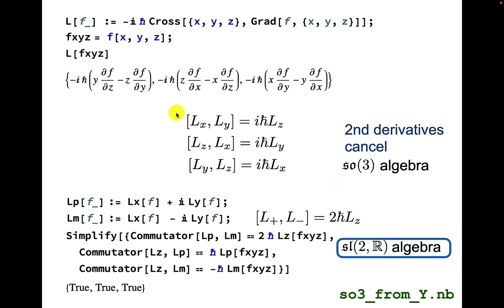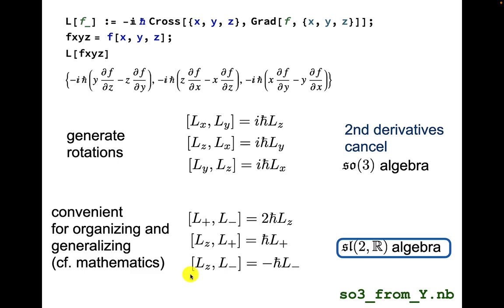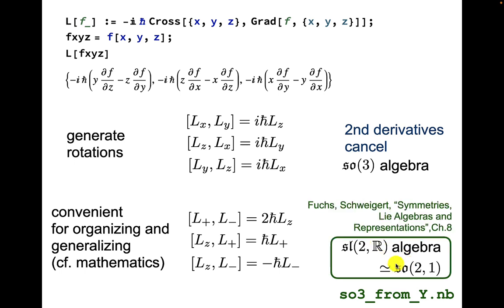Let me write it nicer. So the first commutators are written like this, and the second set of commutators are written like this. Now, usually the angular momentum R cross P has to do with rotations. In fact, these operators generate rotations. Whereas this setup can be more convenient for organizing and generalizing in mathematics. So mathematicians tend to talk about this type of algebra, even though from a physics point of view, we usually start out trying to understand SO3.